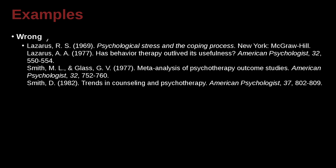We've got the author's last name first, and then the first and middle name. The first name and middle name are abbreviated with a period and a space, and then a year inside parentheses. A period, a space, then we've got the title — in this case the name of a book, so it's italicized. We have the city, location, and publisher, so that's looking good.